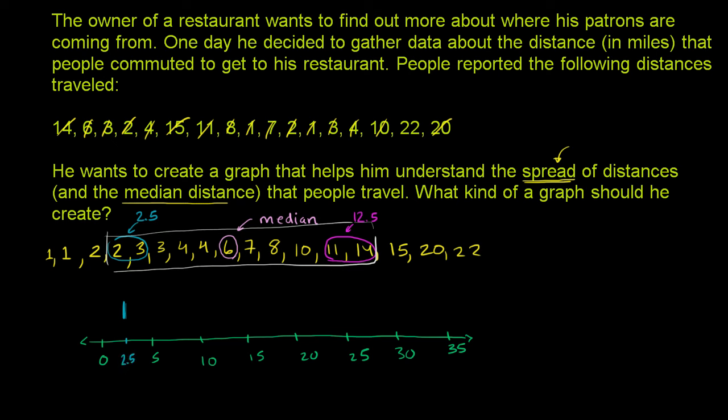And then up here we have 12.5. And 12.5 is right over, let's see, this is 10, so this right over here would be halfway between 10 and 15, which is 12.5. So that separates the third quartile from the fourth quartile. And then our box is everything in between. So this is literally the middle half of our numbers.